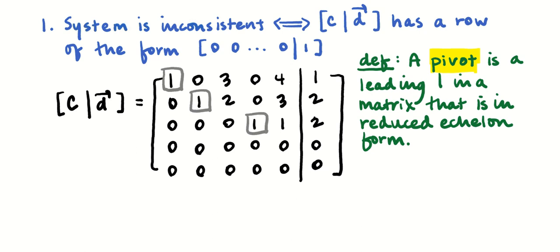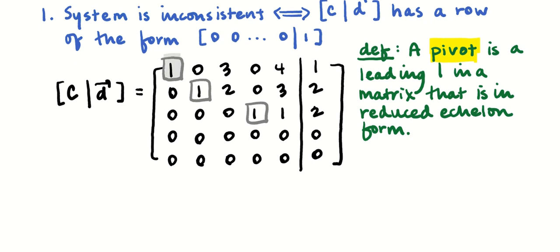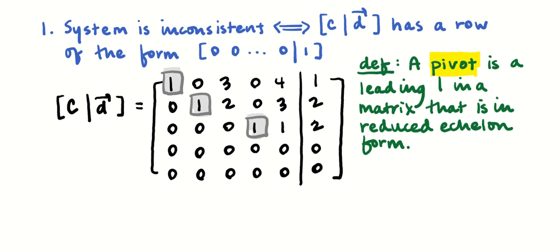Not every one in a matrix in reduced echelon form is a pivot — it has to be a leading one in a given row. We're going to let R equal the number of pivots of a given matrix. We'll have a reason to call this R later. For now, you can think of it as the number of non-zero rows, because if a matrix is in reduced echelon form, the first entry in any given row is a one, and that one is the only non-zero entry in its respective column.